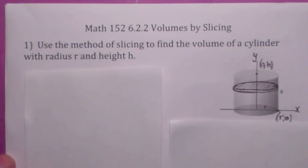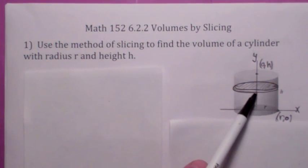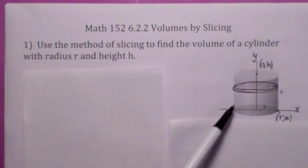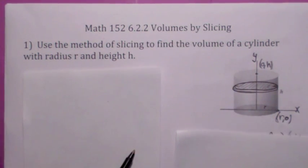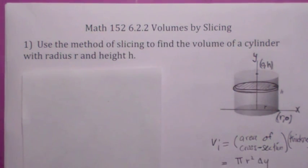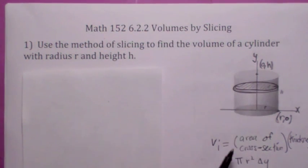In this first example we have a cylinder of radius r and height h. We know the volume is πr²h, but we're going to look at it as slicing this perpendicular to the y-axis, where the thickness would be Δy. The volume of this slab would be the area of the cross-section times the thickness. In this particular problem, the radius is always constant r, so the area of the cross-section is always πr².